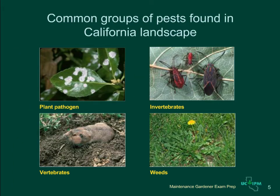The most common groups of pests causing damage in landscapes are shown here. They include plant pathogens, which are microorganisms like fungi, bacteria, or viruses that cause disease in plants. The next group is invertebrates, which are animals without backbones such as insects, mites, and snails. Vertebrates are another group of pests, which include gophers and moles. And finally, weeds, which include any unwanted plants growing in the landscape. Let's talk about how to identify pests in each of these groups.